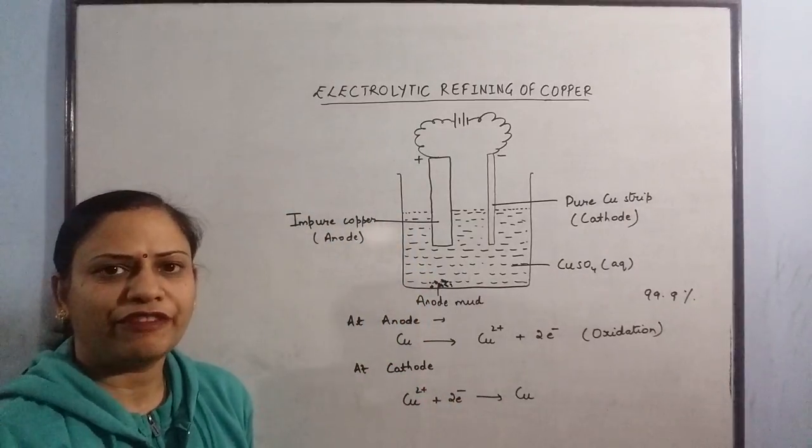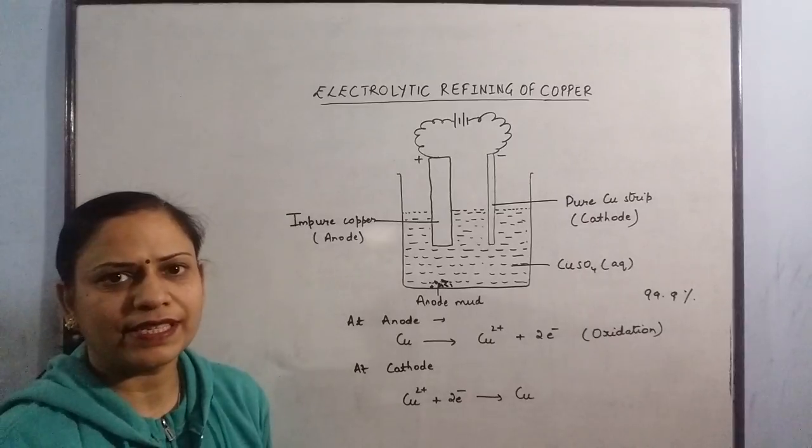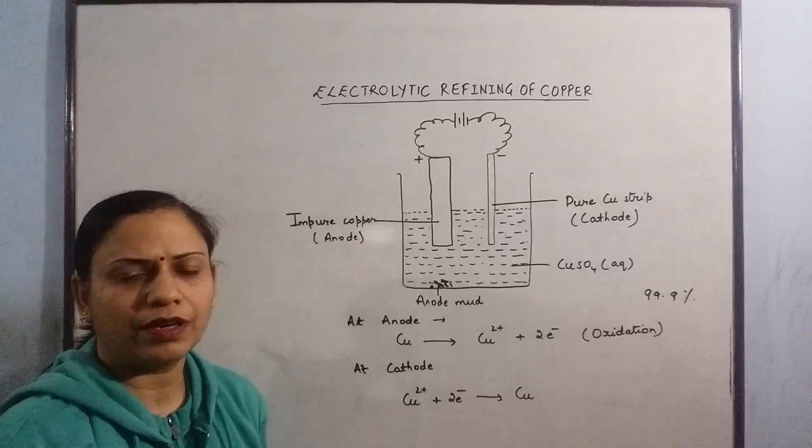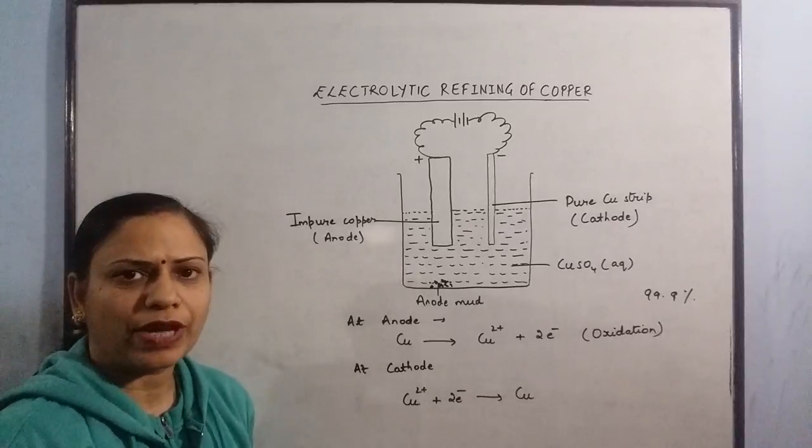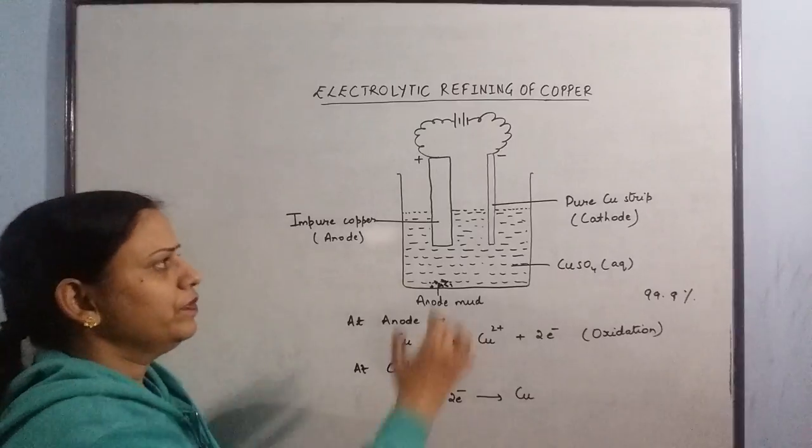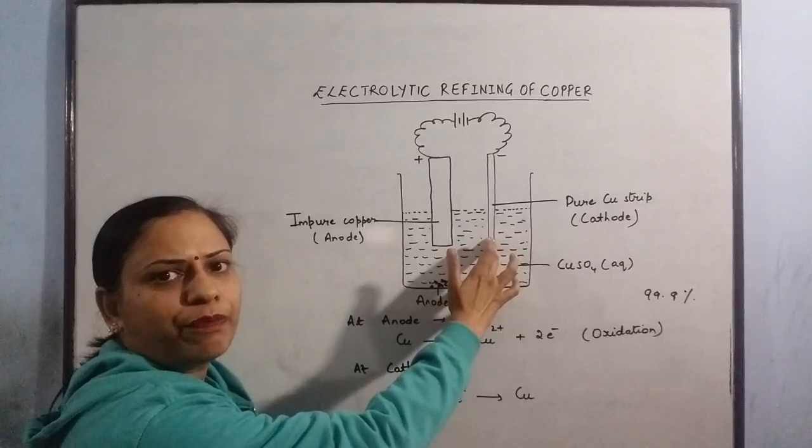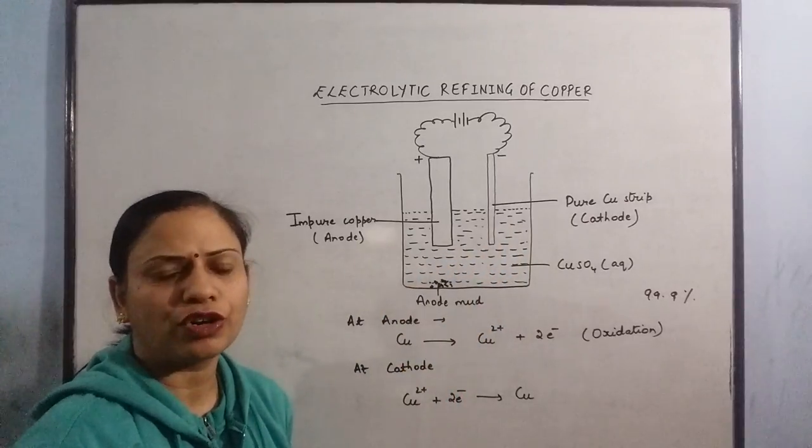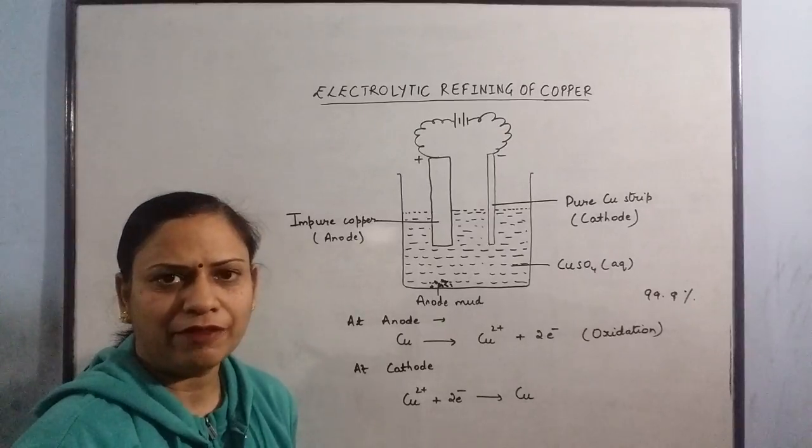This method can be used for the refining of other metals also. The thing that has to be taken care of is that the anode should always be of the metal which has to be purified. For example, if we have to carry out the refining of silver, this anode has to be of impure silver, this cathode has to be of pure silver and the solution that we are taking should be of some sort of silver. We can say a solution of silver nitrate can be taken for the purpose.